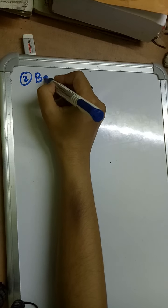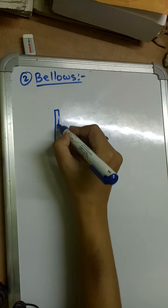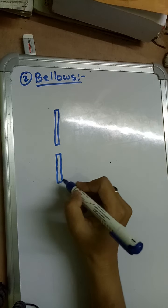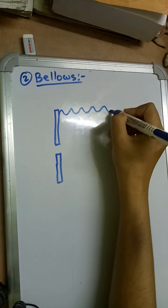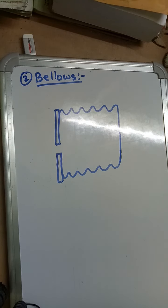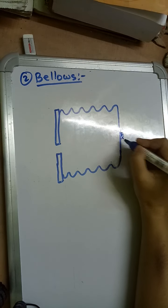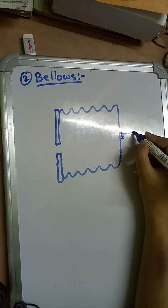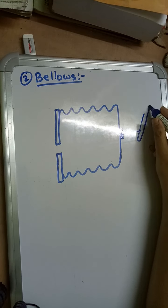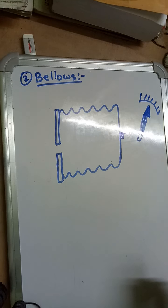Next, we will discuss bellows. So what is bellows? Let me draw the bellows structure. So there are some convolutions, and here the deflection will take place. It is connected to a pointer of this kind.